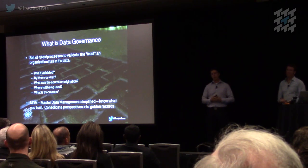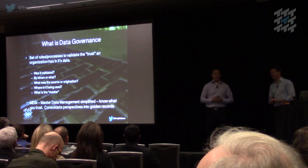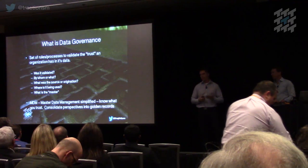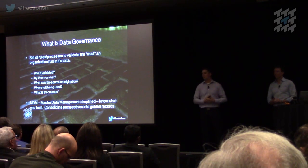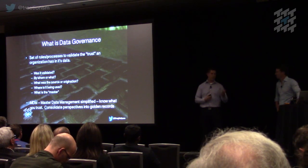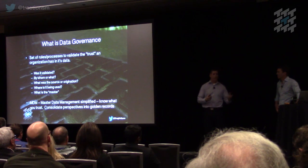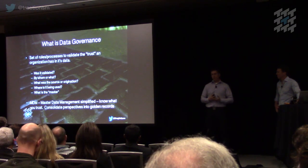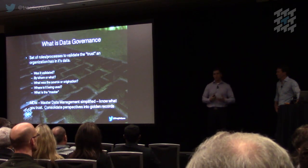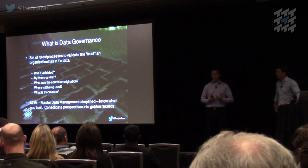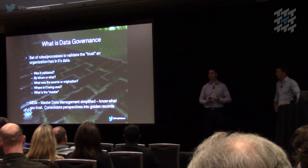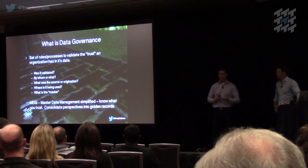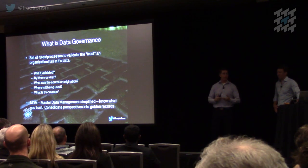The last thing I'll cover before we get into the fun part is governance. We're having a ton of conversations with organizations of all sizes saying, 'I don't trust my marketing team to just mass-import lists of leads,' or 'I don't trust my sales users to create account records because there's a bias — they might want to duplicate accounts or create territory challenges.' Data governance is really a set of rules and processes to validate the trust you have in a record. The questions are: was it validated by whom or what system? You could be looking at third-party appends, data.com, or systems like D&B. You have the source of origination, where it's being used, and what is the master record.